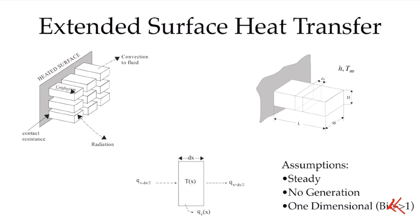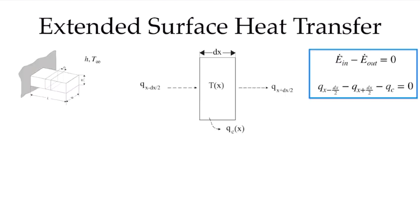With this one-dimensional assumption, we're essentially assuming that at a given x, the temperature is constant in this direction. For that to be true, the Biot number has to be small. With those assumptions, we can reduce our conservation of energy equation to E_in minus E_out equals zero. Into my volume, I have Q at x minus dx over 2, the conduction coming in. Going out, I have the conduction going out and the convection going out from the surface area, and that is equal to zero.